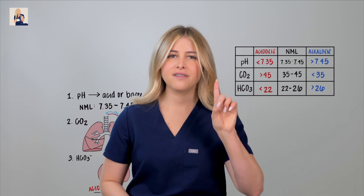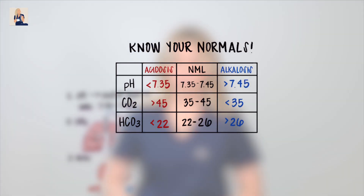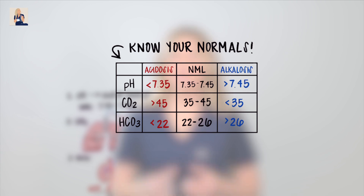Three key facts we need to know before interpreting ABGs. Fact number one: know your normals. Memorize this chart. There's no way around it — just memorize it.